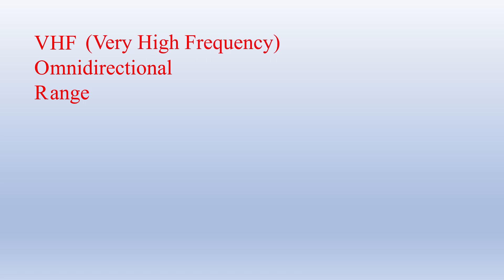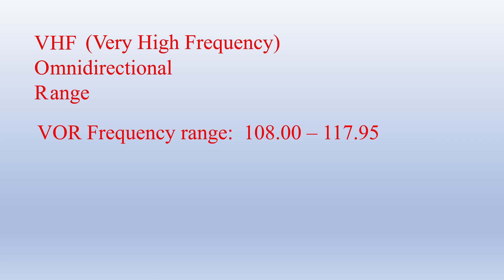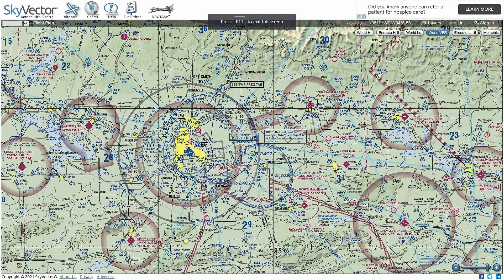VOR stands for VHF Omnidirectional Range. VHF means Very High Frequency, which is just a reference to the radio frequencies these stations inhabit. VHF frequencies are found between 30 and 300 MHz, and VOR frequencies are just above the FM commercial radio stations between 108.0 and 117.95, though they share some of that space with navigation transmitters for instrument landing systems. Voice communication frequencies live just above the VOR frequency range, between 118 and 137. If you could tune an FM radio just beyond its normal range, say up to 110.4 driving through west central Arkansas, you'd hear the Morse code identifier for the Fort Smith VOR.